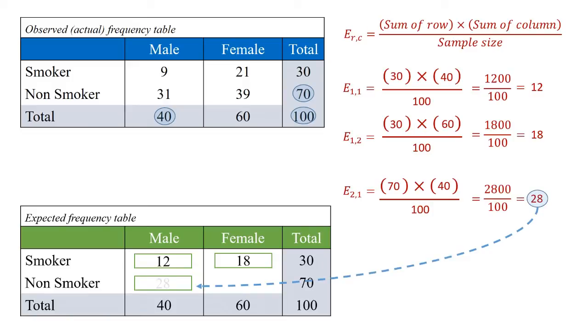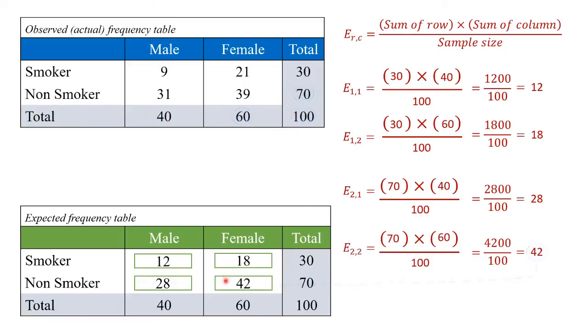Finally, we do the bottom right-hand cell of this expected frequency table. For this, we take the total of the second row, 70, times the total of the second column, which is 60, and divide by 100. This gives us a value of 4200 divided by 100, equal to 42.